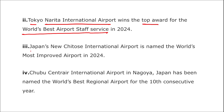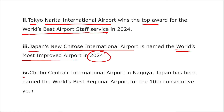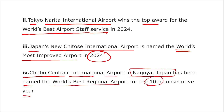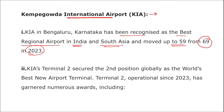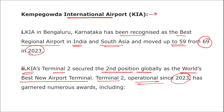Tokyo Narita International Airport won the top award for World's Best Airport Staff Service. Japan's New Chitose International Airport has been named the World's Most Improved Airport of 2024. Chubu Centrair International Airport in Nagoya, Japan has been named the World's Best Regional Airport for the 10th consecutive year. For Indian airports, Kempegowda International Airport in Bengaluru, Karnataka has been recognized as the best regional airport in India and South Asia, moving up to 59th from 69th position in 2023.